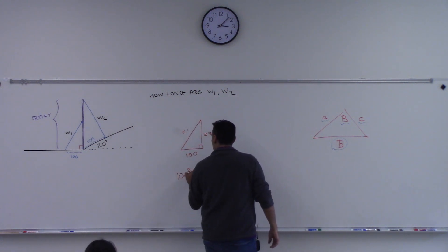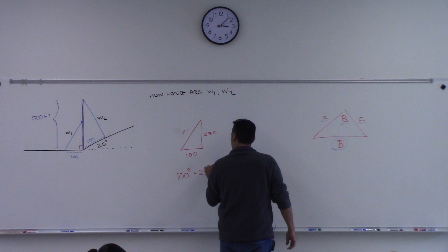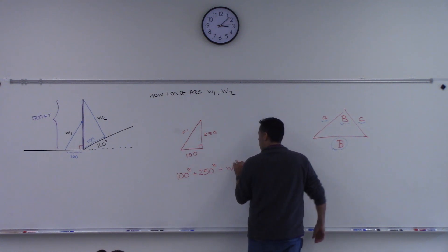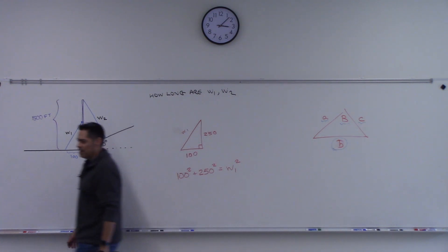100 squared plus 250 squared equals W1 squared. Wait — cosine of 90 is actually zero, not 1.